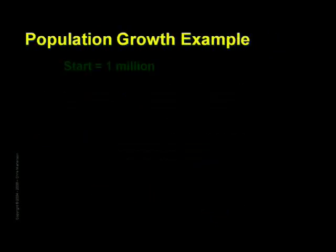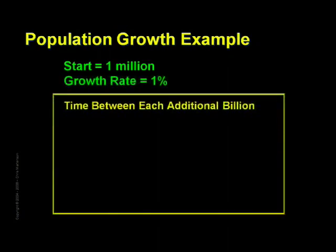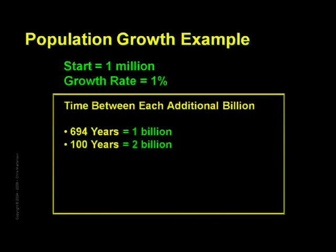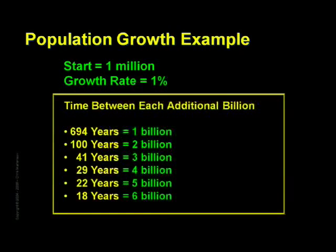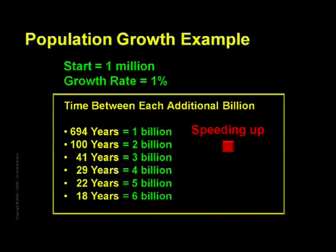To illustrate this using population: if we started with one million people and set the growth rate to a measly one percent per year, we'd find that it would take 694 years before we achieved a billion people. But we'd be at two billion people after only a hundred more years, while a third billion would require just 41 more years. Then 29 years, then 22, and then finally only 18 years to add another to bring us to 6 billion people. That is, each additional billion people took a shorter and shorter amount of time to achieve. Here we can see the theme of speeding up.